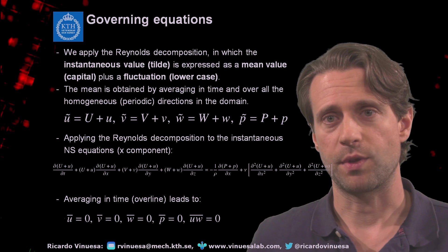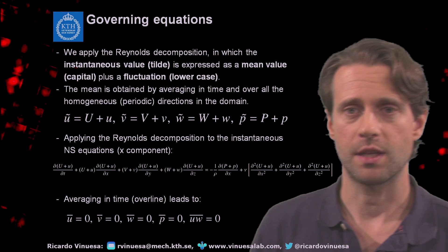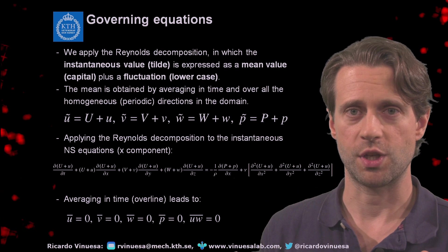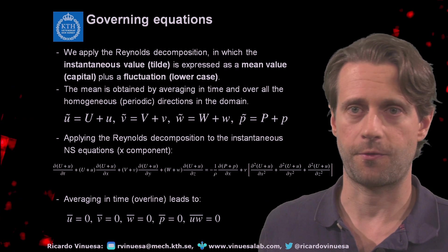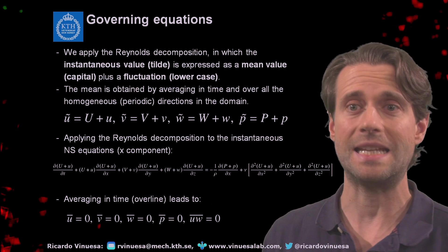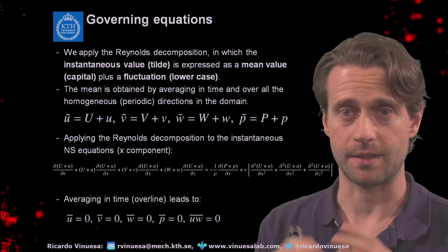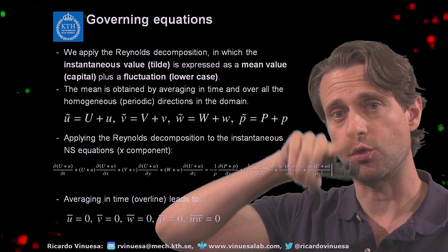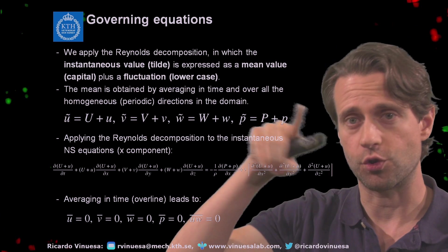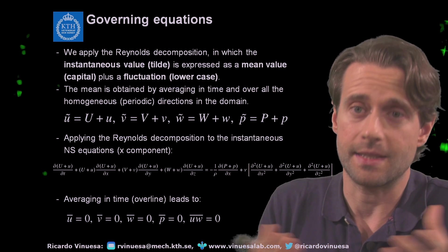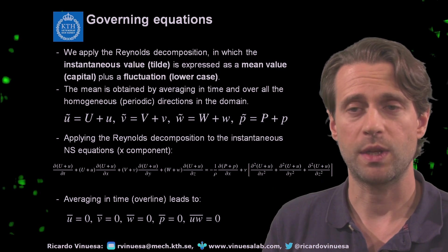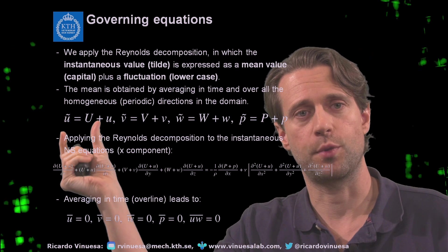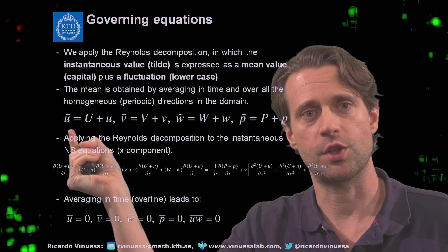Now we can work a little bit with these governing equations. There is something called the Reynolds decomposition. The Reynolds decomposition is one of the first tools we have to study turbulence in a statistical manner. Turbulence is highly chaotic, as we mentioned before — we looked at those vortices, at those motions. It's an unsteady problem.